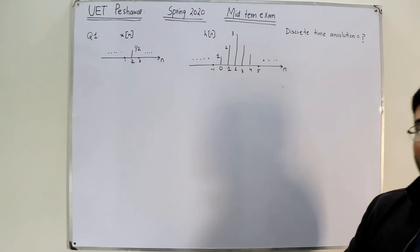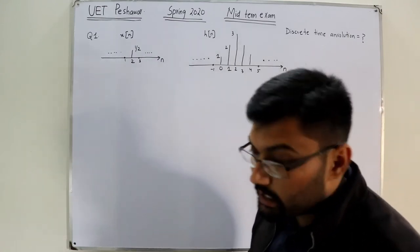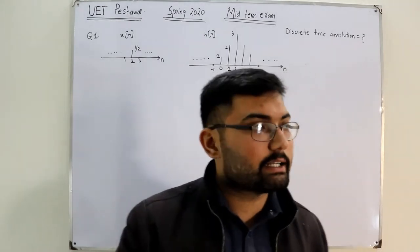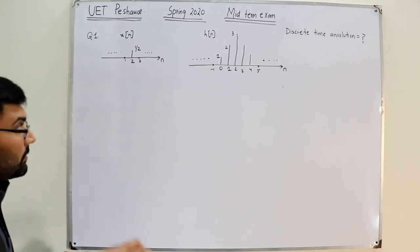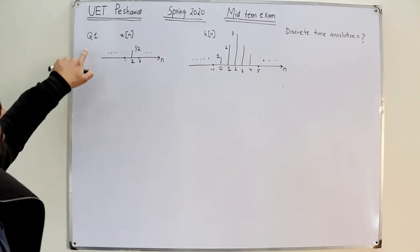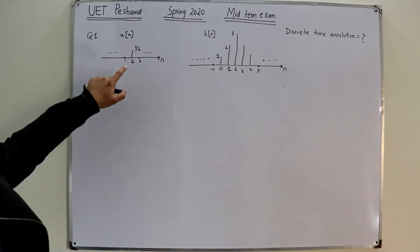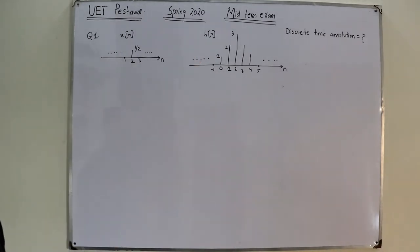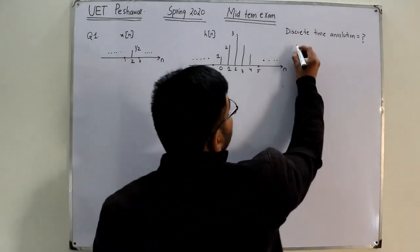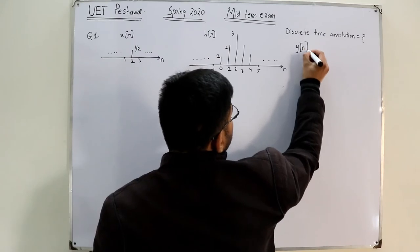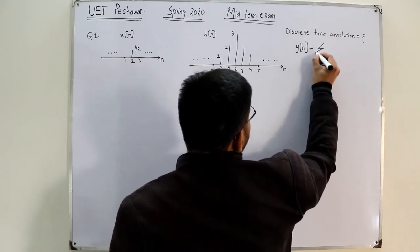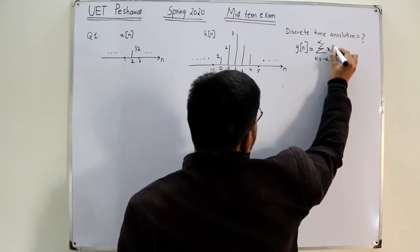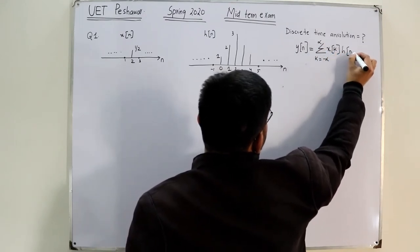Now, at the beginning of the video I said Question 1 was already solved in assignment two — but that was someone else's paper, an affiliated college paper. Our paper, our university UTP, Question 1 was this one: you are given x of n, you are given the impulse response h of n, and you are asked the discrete-time convolution. So y of n equals summation K from negative infinity to positive infinity of X of K into H of n minus K.